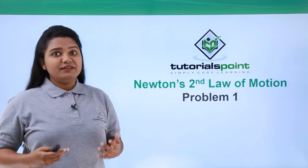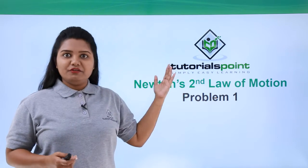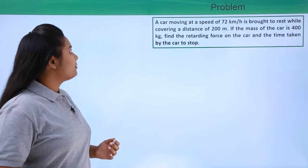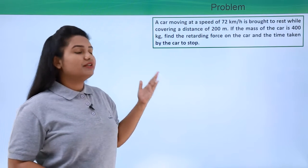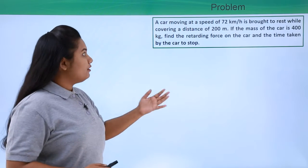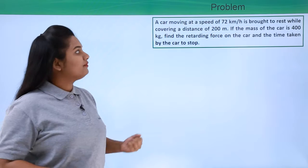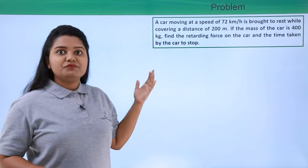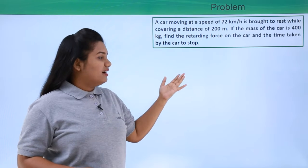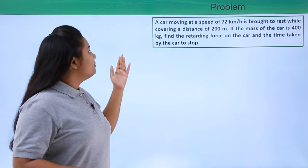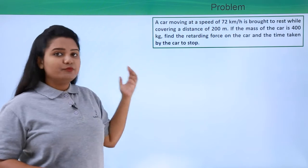Hello everyone. In this video we're going to solve a problem based on Newton's second law of motion. Here is the problem: a car moving at a speed of 72 kilometers per hour is brought to rest while covering a distance of 200 meters. If the mass of the car is 400 kg, find the retarding force on the car and the time taken by the car to stop.